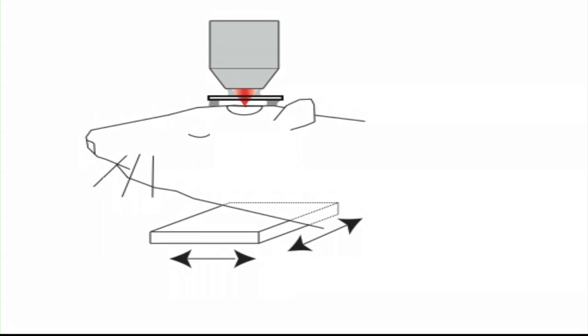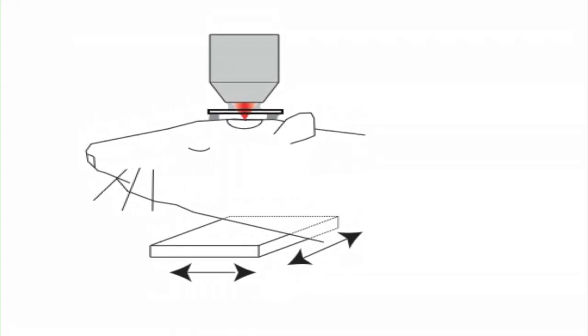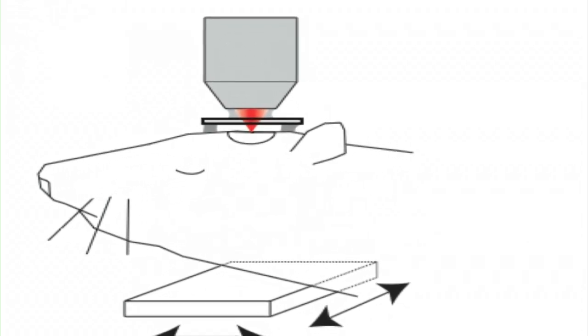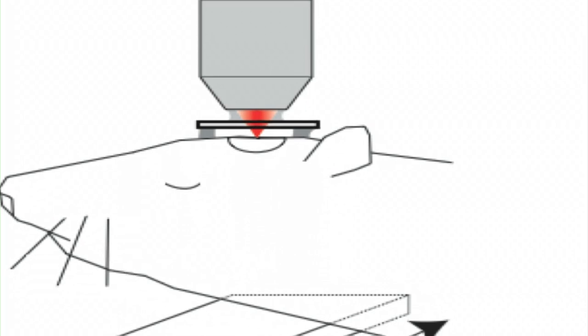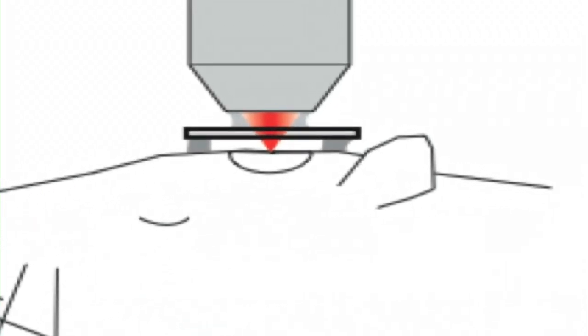So to do these experiments, we remove a small section of the skull in an anesthetized mouse and replace it with a thin piece of glass. This gives us optical access to the brain where we can use light both to image and manipulate the tissue underneath the craniotomy.